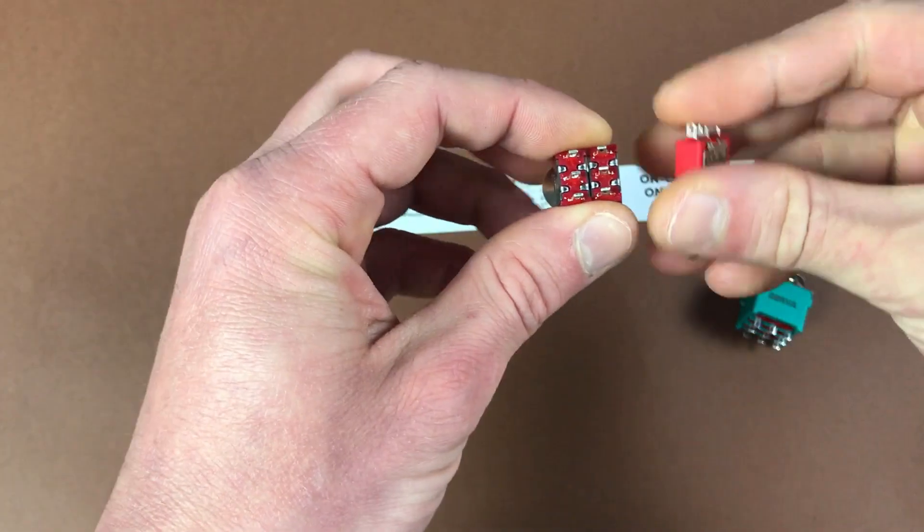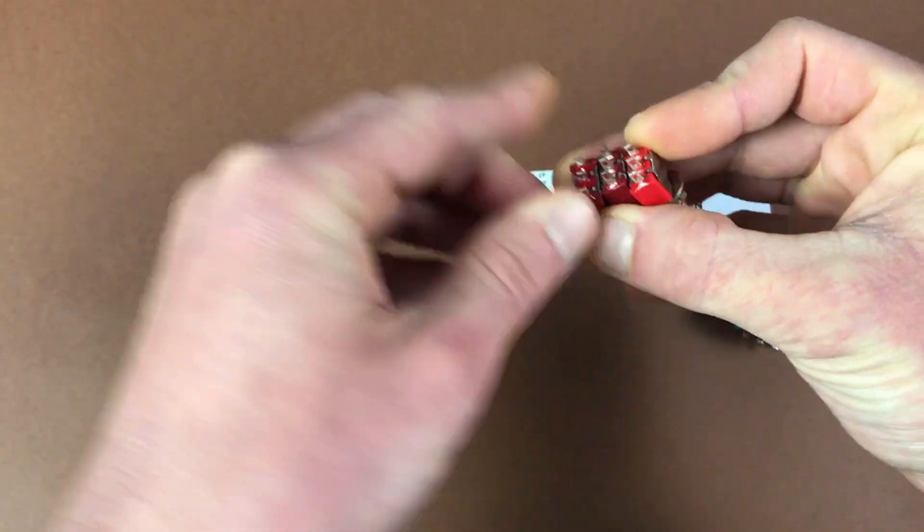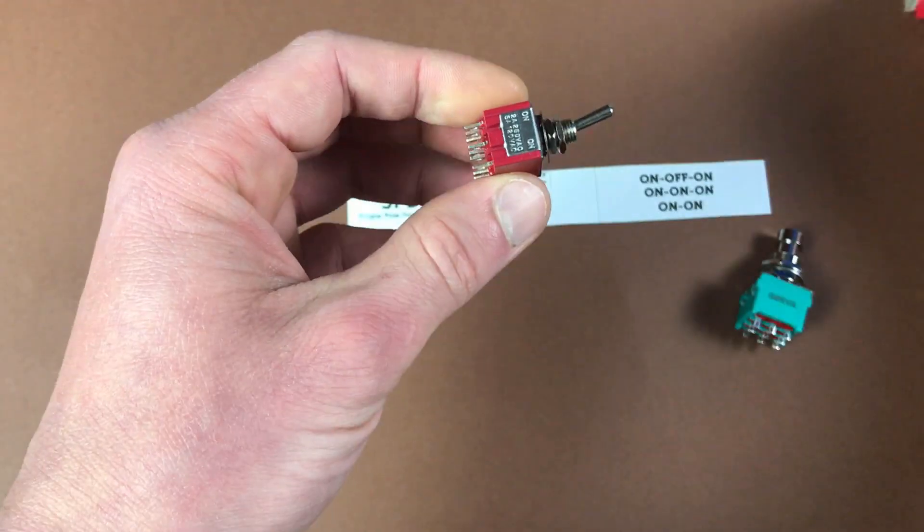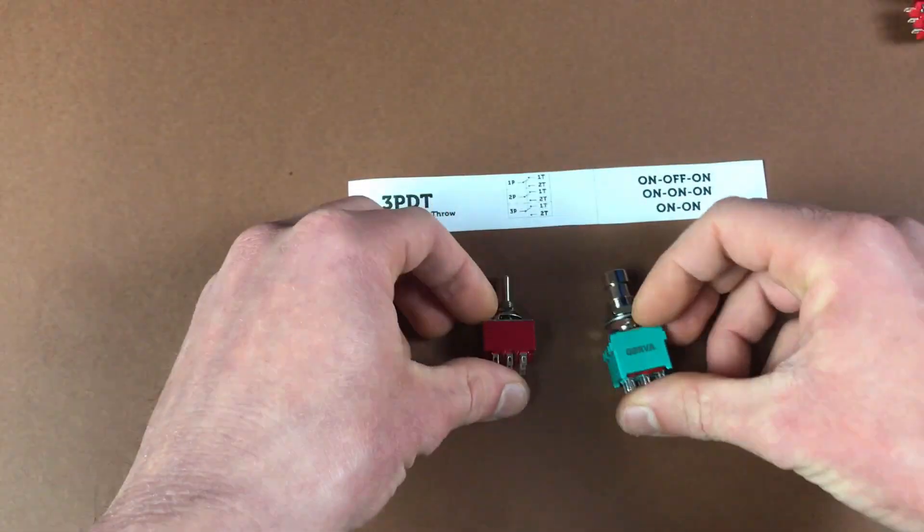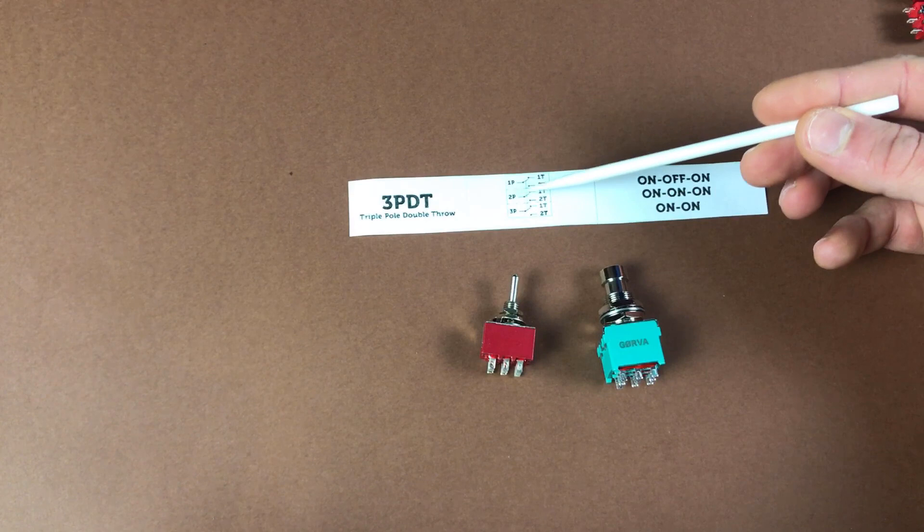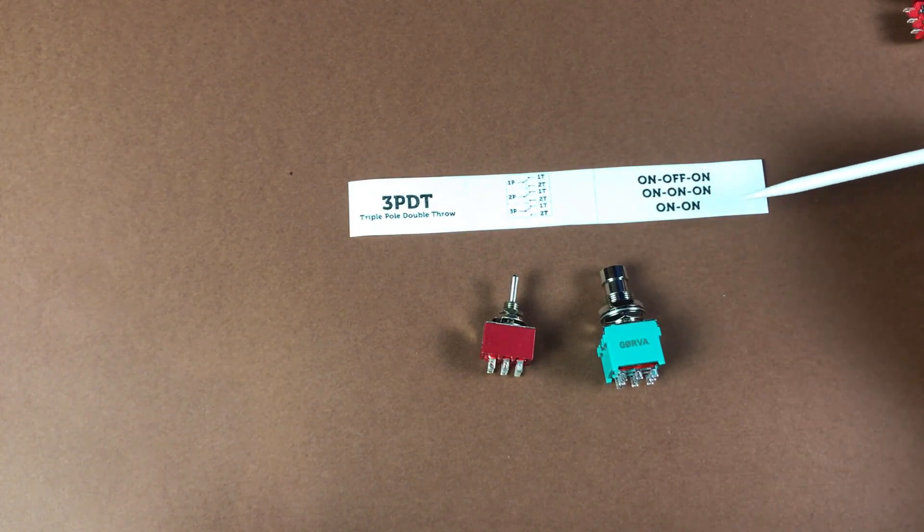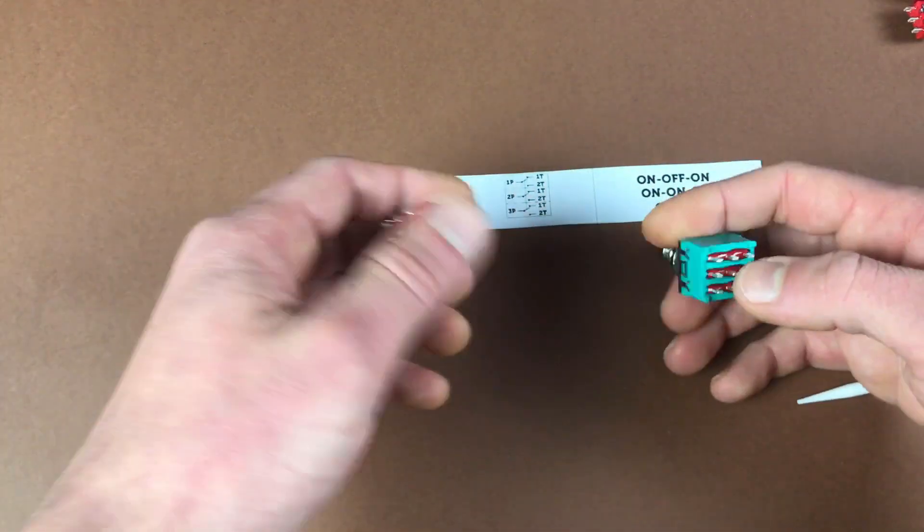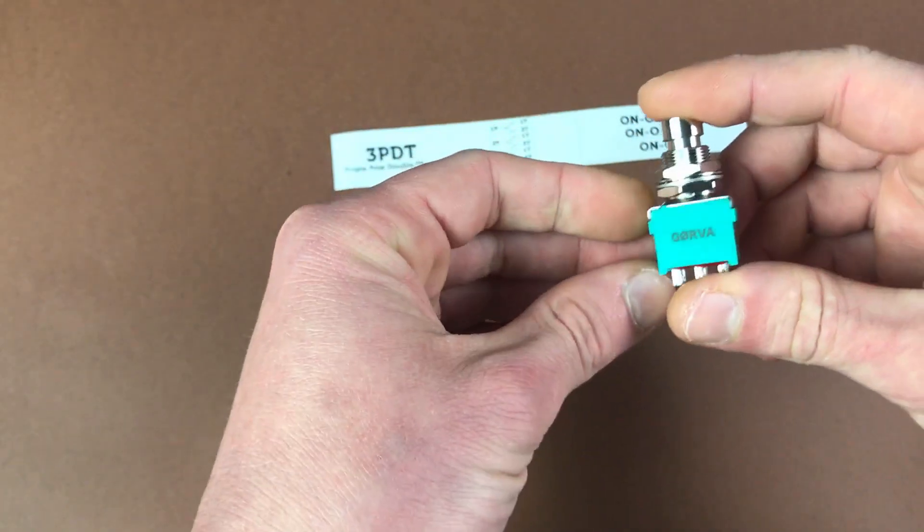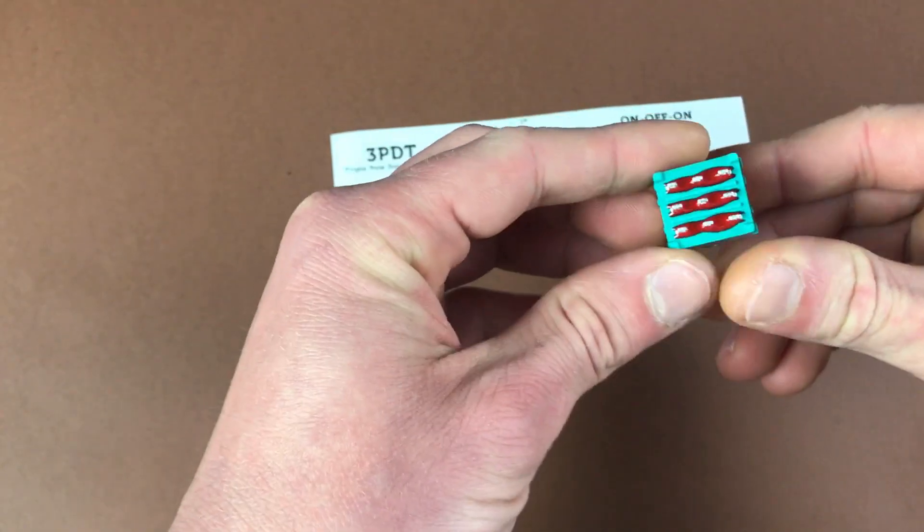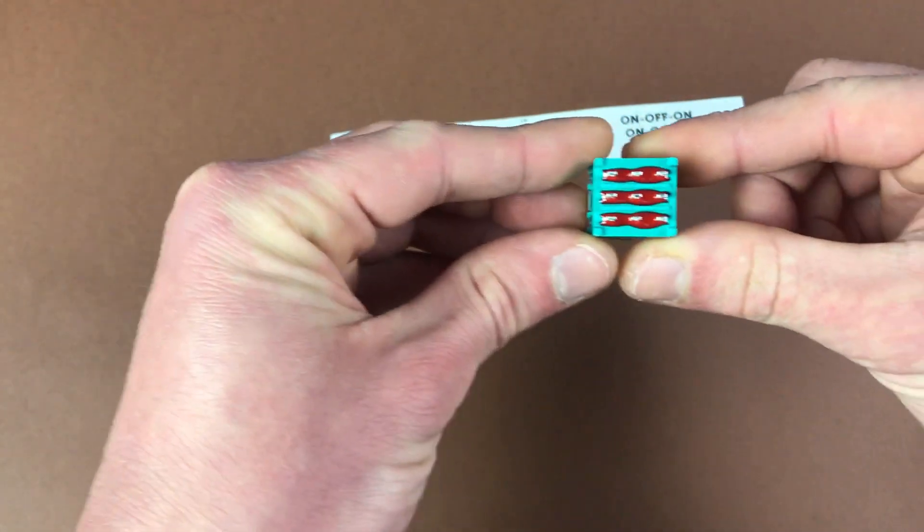Next we have a triple pole, double throw. So once again it's just three SPDT switches in one controlled by one lever. It's that simple. So yeah it's just another extension of those switches. We have three circuits now to control and each with two outputs. This switch is commonly used for a true bypass switching. I also like to use them for effect order switching. But actually you can do anything with any of those switches.